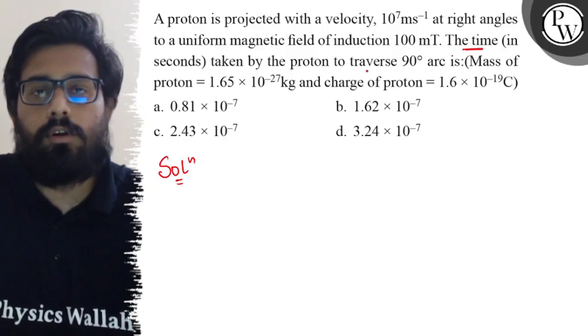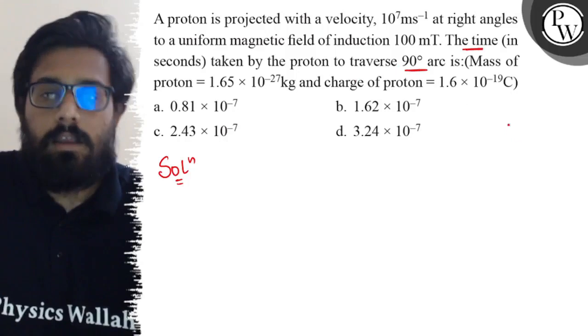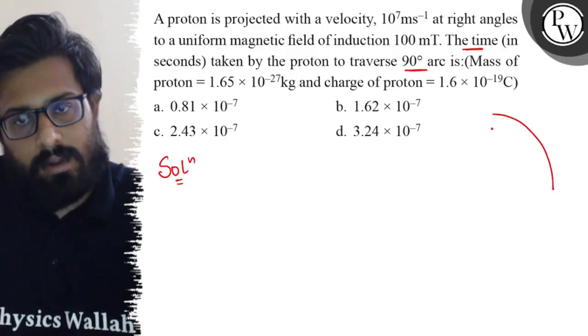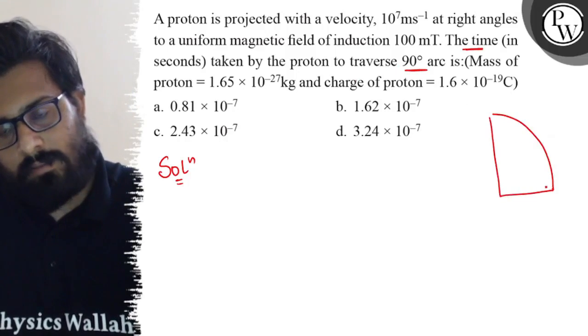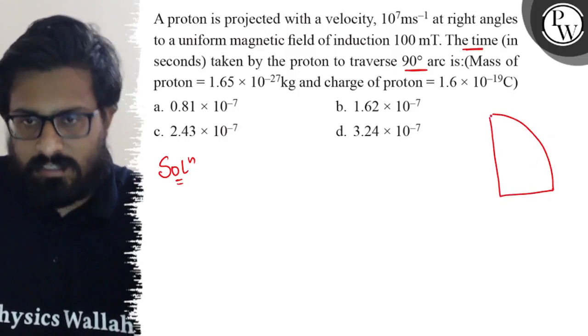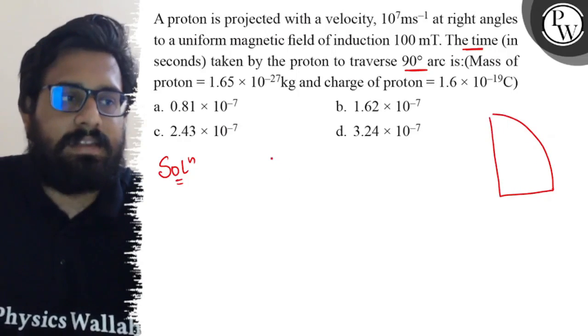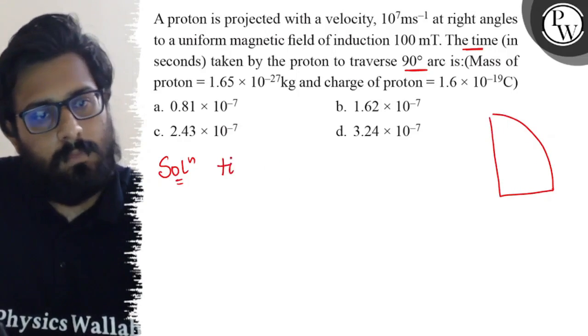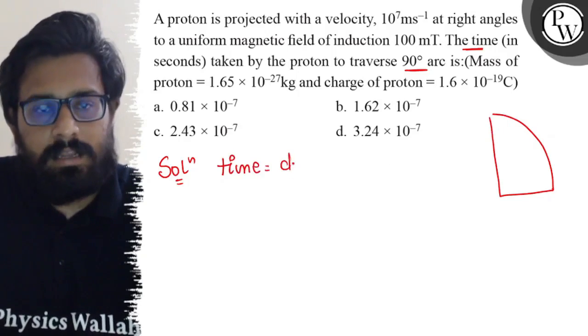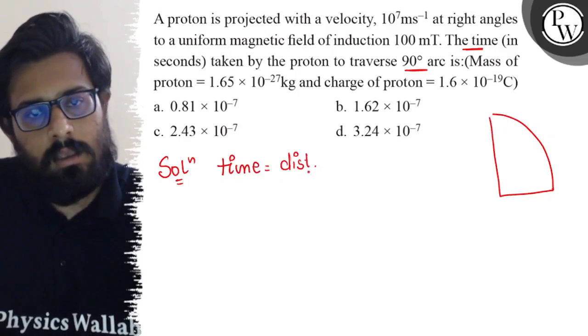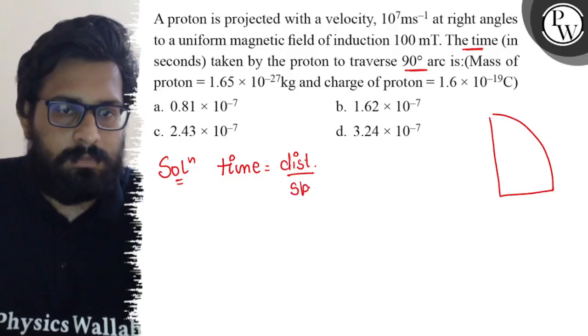taken by the proton to traverse a 90 degree arc. So the proton travels in a 90 degree arc like this. In such scenarios, you can simply state that the time equals distance upon speed.